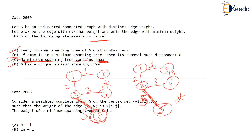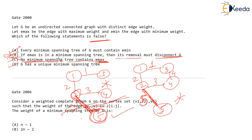Option B: if Emax is in the minimum spanning tree, then its removal must disconnect G. In our example, Emax is edge two to five. If I remove this edge from the tree, vertex five becomes disconnected — there is no relation between vertices one, two, three, four and vertex five. So its removal must disconnect G — this is correct. Option B is true.